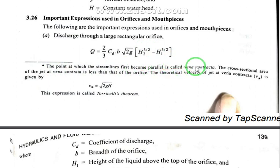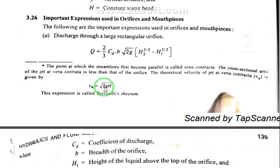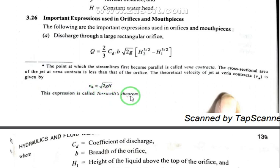The point at which streamlines first become parallel is called vena contracta, and the cross-sectional area of the jet at vena contracta is less than that of the orifice. The theoretical velocity of the jet at the vena contracta, Vth, is given by the square root of 2gH. This expression is called Torricelli's theorem.